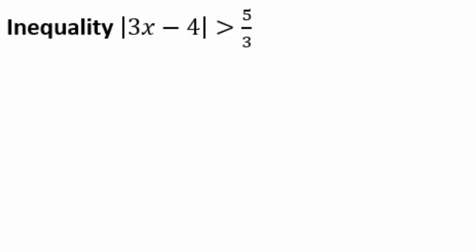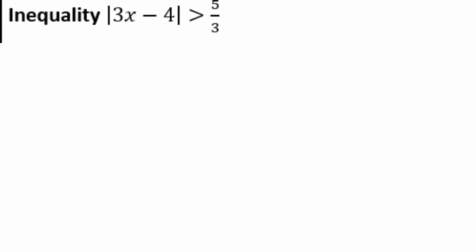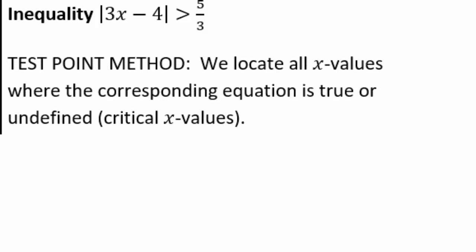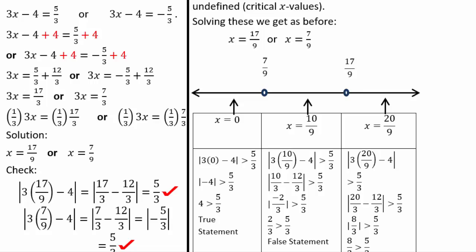So now what happens when you have an inequality? From solving the equation, the solutions were 17 ninths and 7 ninths. We don't know how to directly undo the absolute value inequality, so we use the test point method again. We know 17 ninths and 7 ninths make it exactly equal, so we put holes there. The number line has three regions: below 7 ninths, between 7 ninths and 17 ninths, and above 17 ninths.